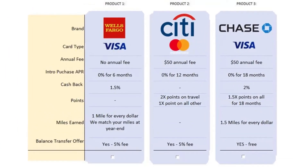This here is a Choice Task example in which survey takers are asked to compare three credit cards. They're given relevant information about the three cards — what brands issue the card, what type of card it is, whether there is an annual fee, if yes how much, whether you have cash back, and many other relevant attributes.